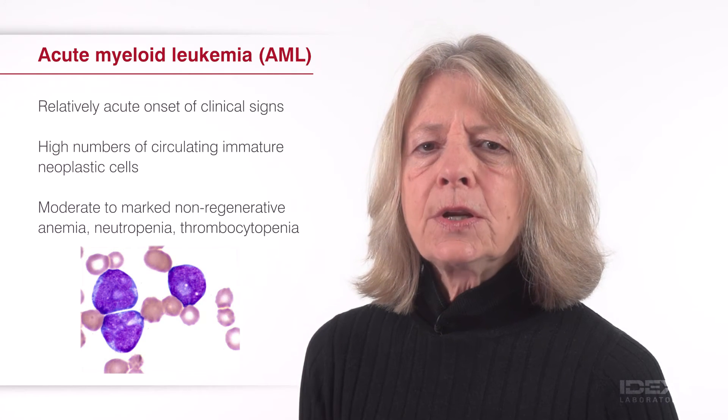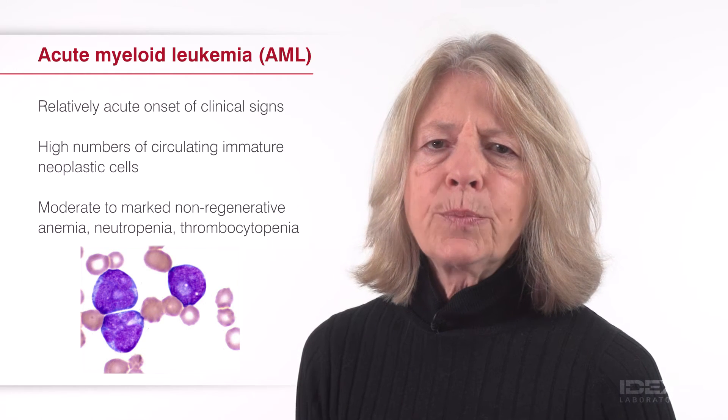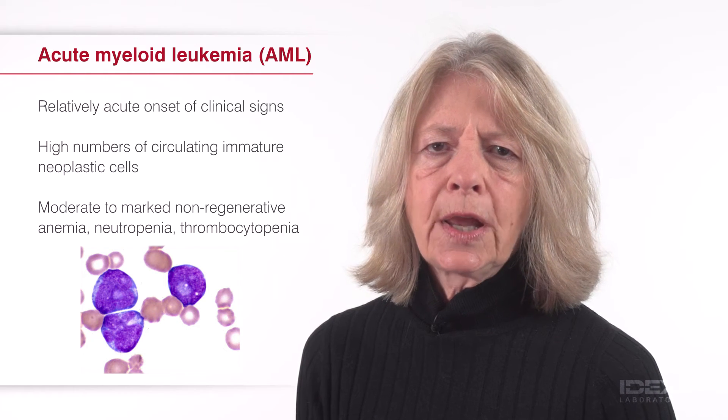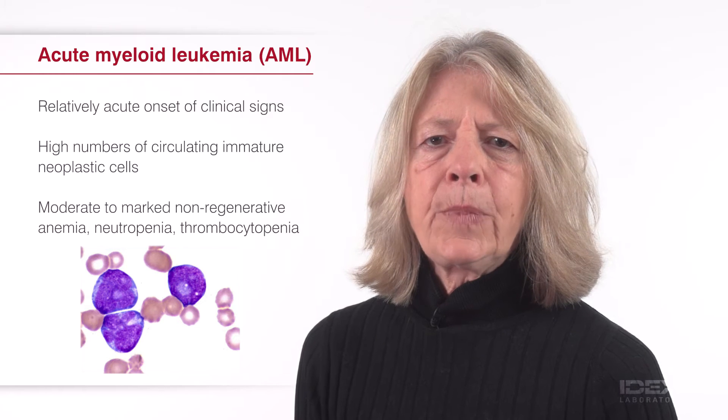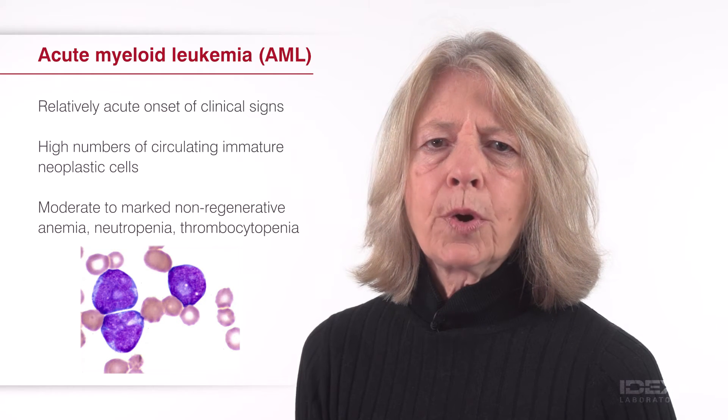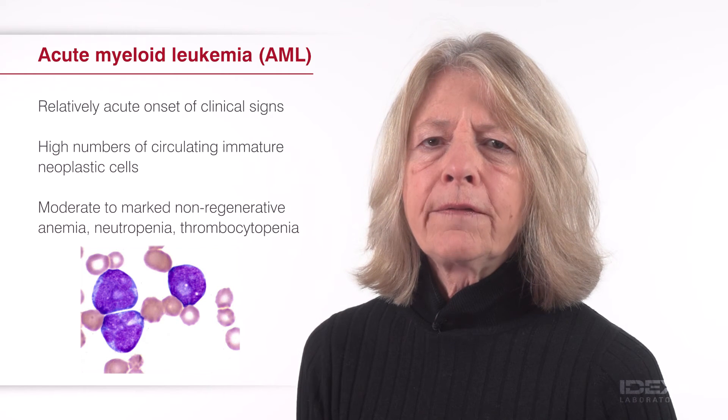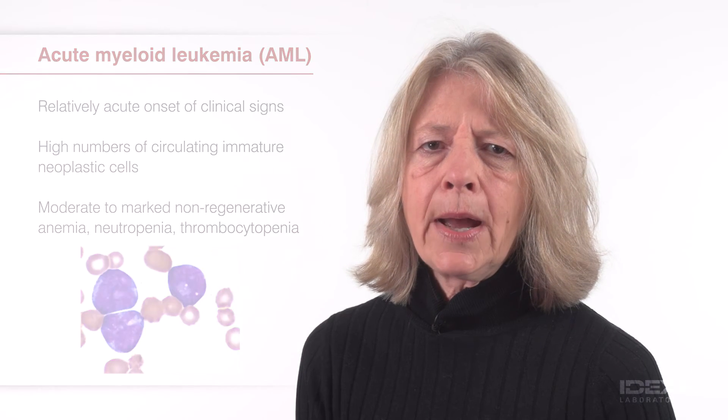The classification of AML is complicated, although it is important to distinguish between acute and chronic leukemia, because of limited treatment options and poor prognosis for acute leukemias. The clinical relevance of distinguishing between acute myeloid and acute lymphoid leukemia, and the further characterization of AML, remains to be determined in dogs and cats. To classify AML, 200 to 500 nucleated cells in a bone marrow aspirate are differentiated to calculate a myeloid to erythroid ratio and to determine the percentages of blasts.